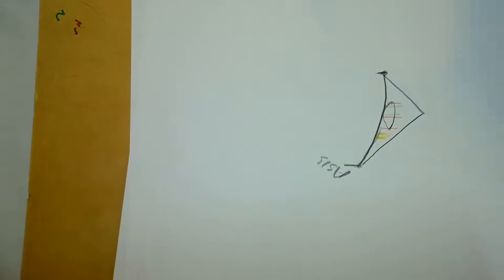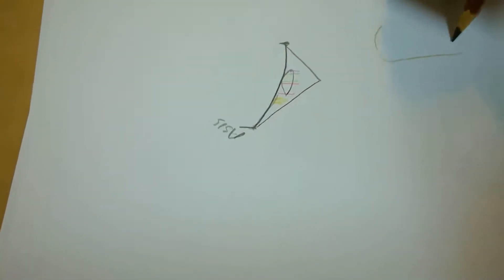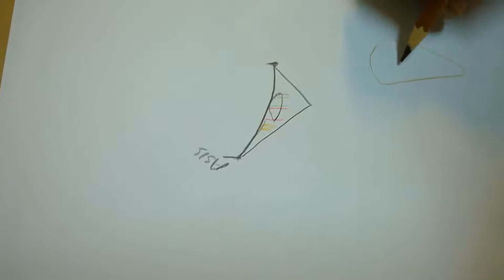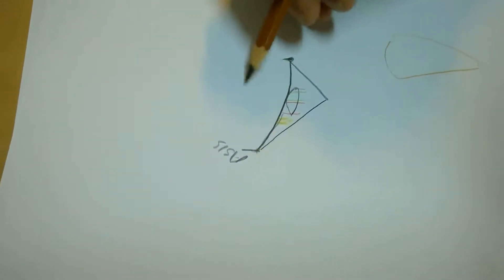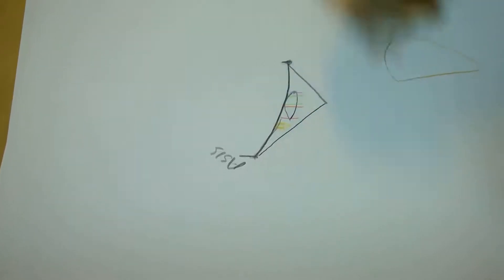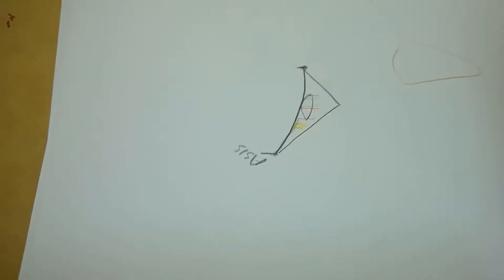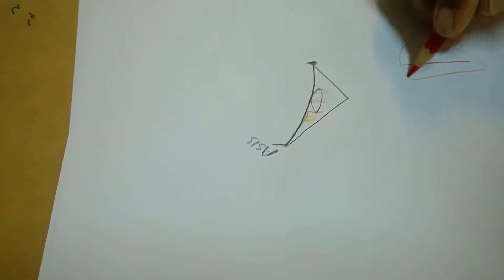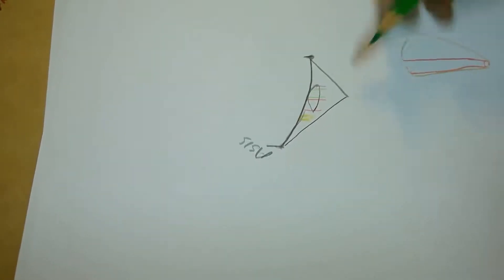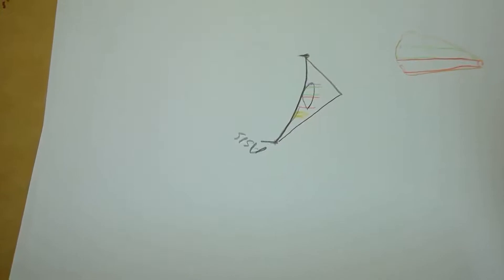This femoral sheath is conical in shape, about 3 to 4 centimeters. The sheath is formed by the fascia iliaca and transversalis fascia. They form a sheet that blends with the adventitia of the femoral artery. The femoral artery is here, the femoral vein is here, and there is a small femoral canal.